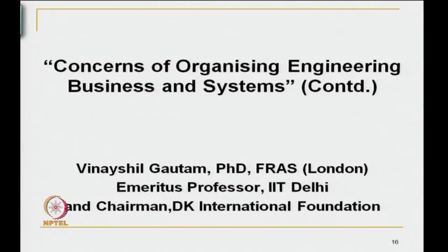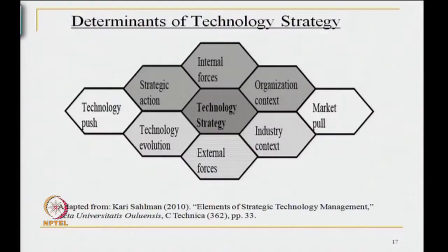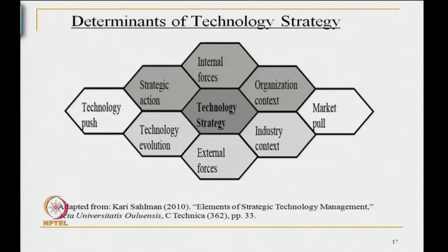To understand the concerns of organizing engineering business and systems, one needs to have a clear understanding of the determinants of technology strategy. It is not possible to be exhaustive or comprehensive in such an elaboration, but a lot of work has been done by way of research and analysis. I would like to reproduce a diagram from Cary Salman, from his writing on elements of strategic technology management at ACTA University. He draws the following diagram for a clearer understanding of the issues.